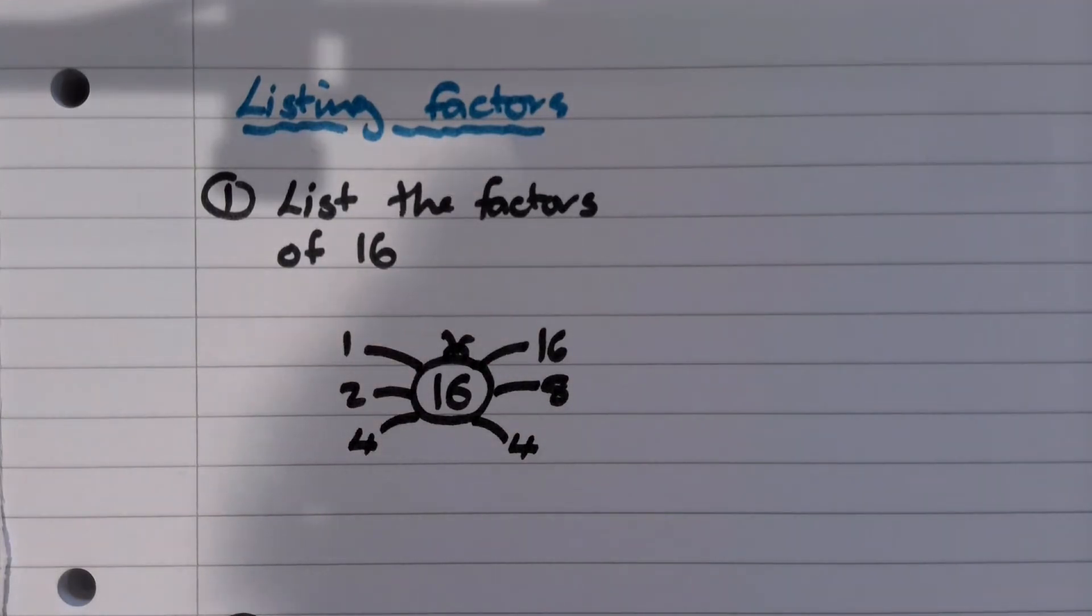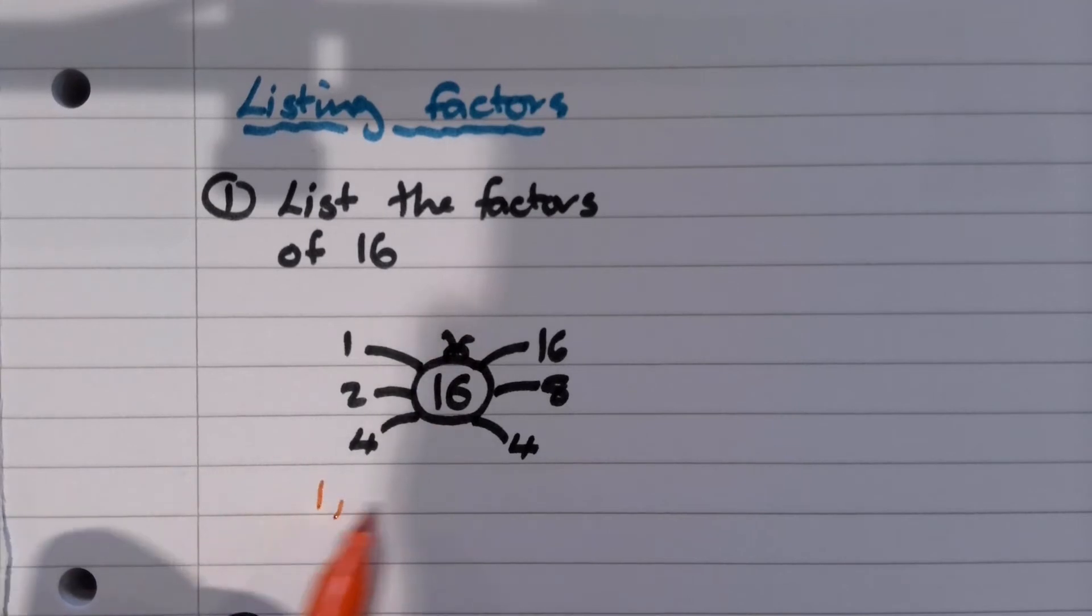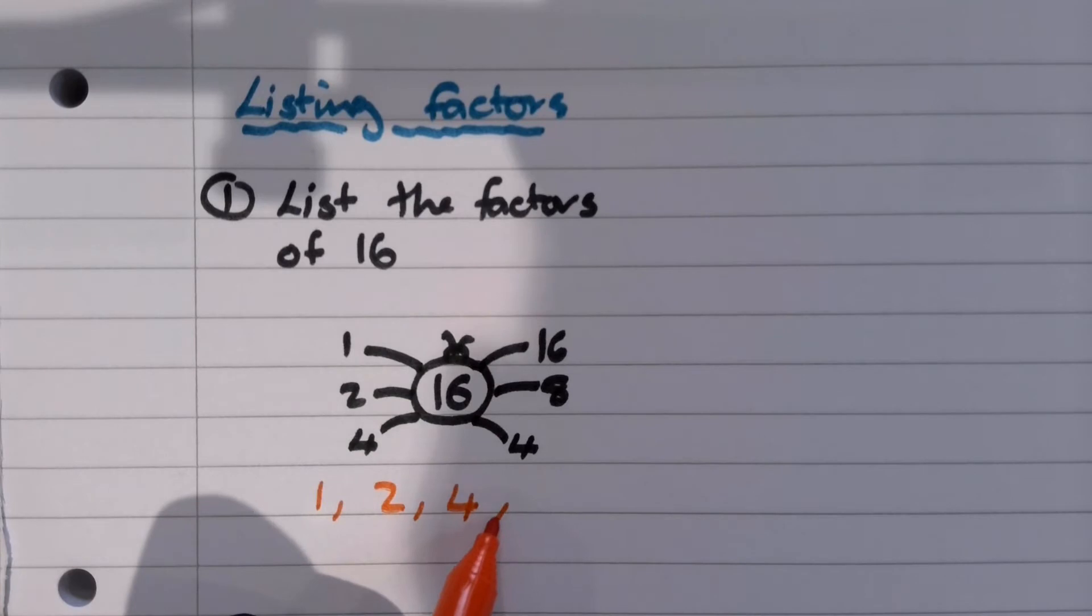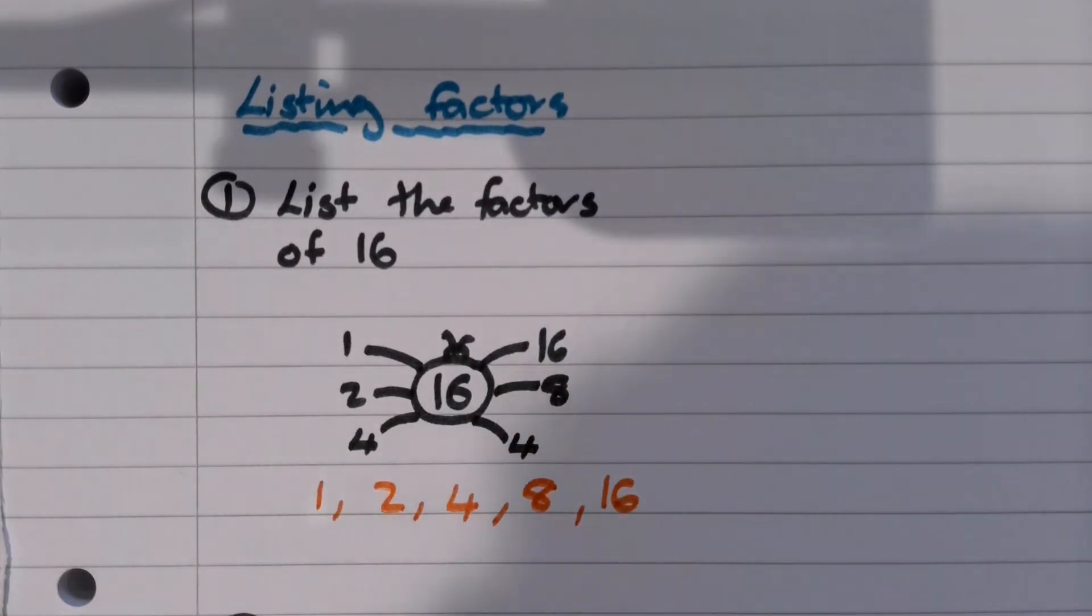Now we just need to list the numbers. And we list them small to big. So it would be one, two, four. We don't write the four down twice. Eight, 16. Okay, so that is the first example.